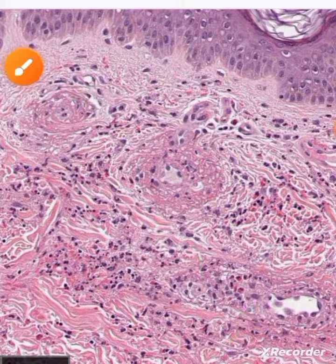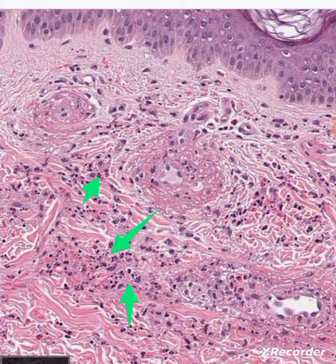Surrounding this material are some neutrophils which we can see here, and there are some eosinophils as well. There is also some nuclear dust — these small remnants are the nuclear dust or karyorrhexis — and we can also see some extravasated RBCs here.